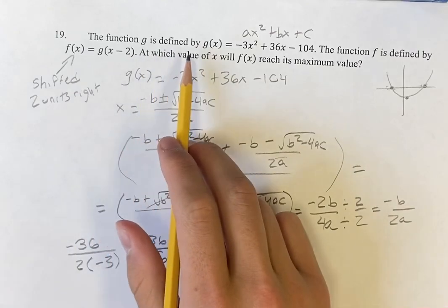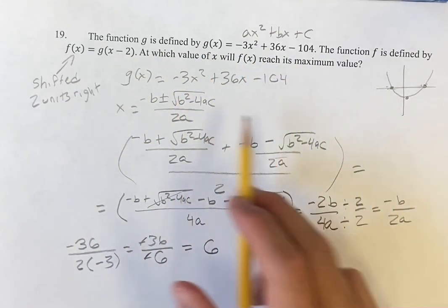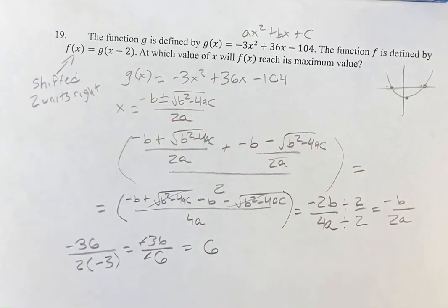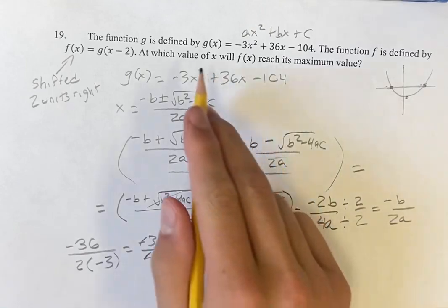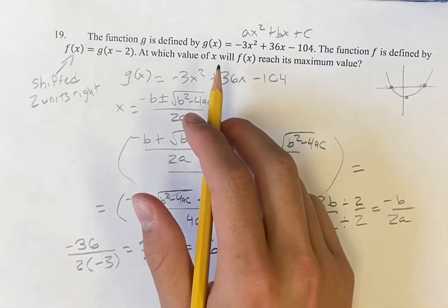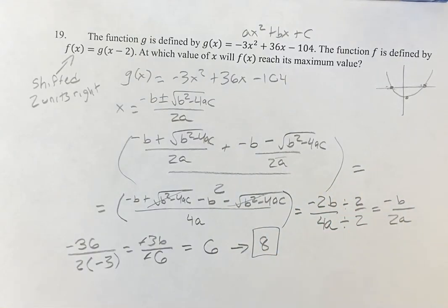So at what value will f(x) reach its maximum value? Well, it's actually not 6, because remember we have to shift it 2 units to the right. So shifting this 2 units to the right is going to bring it to 8. So this is the value of x at which f(x) will reach its maximum value, and that's going to be our final answer.